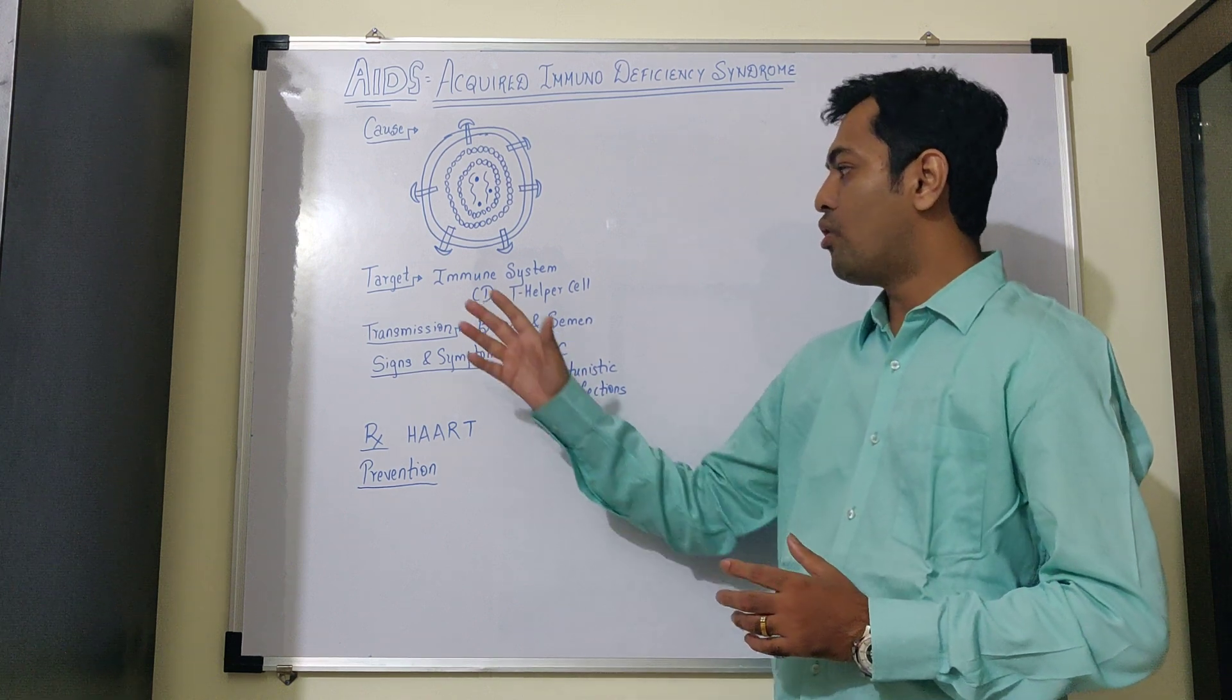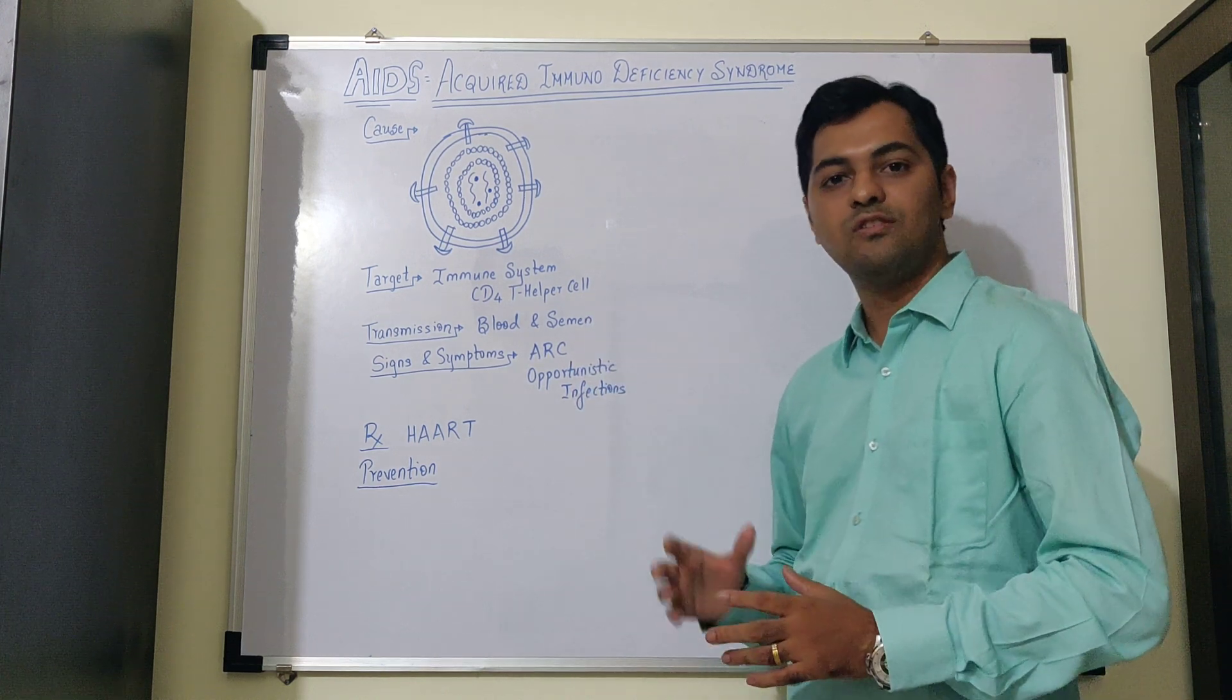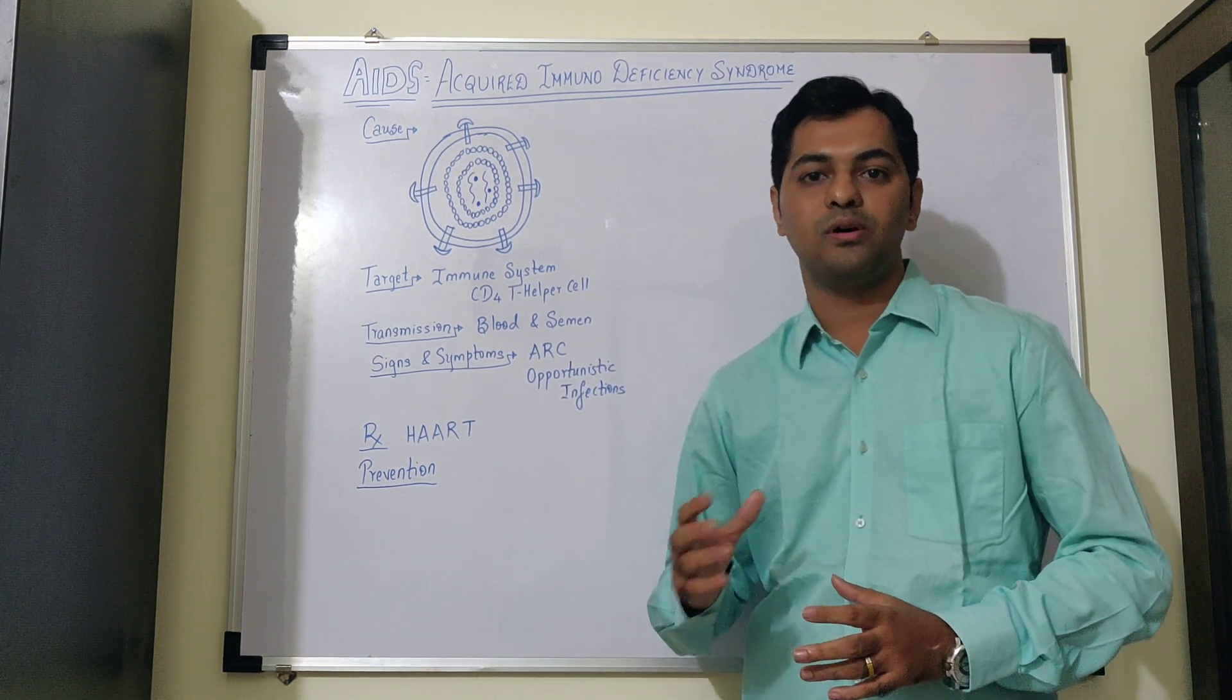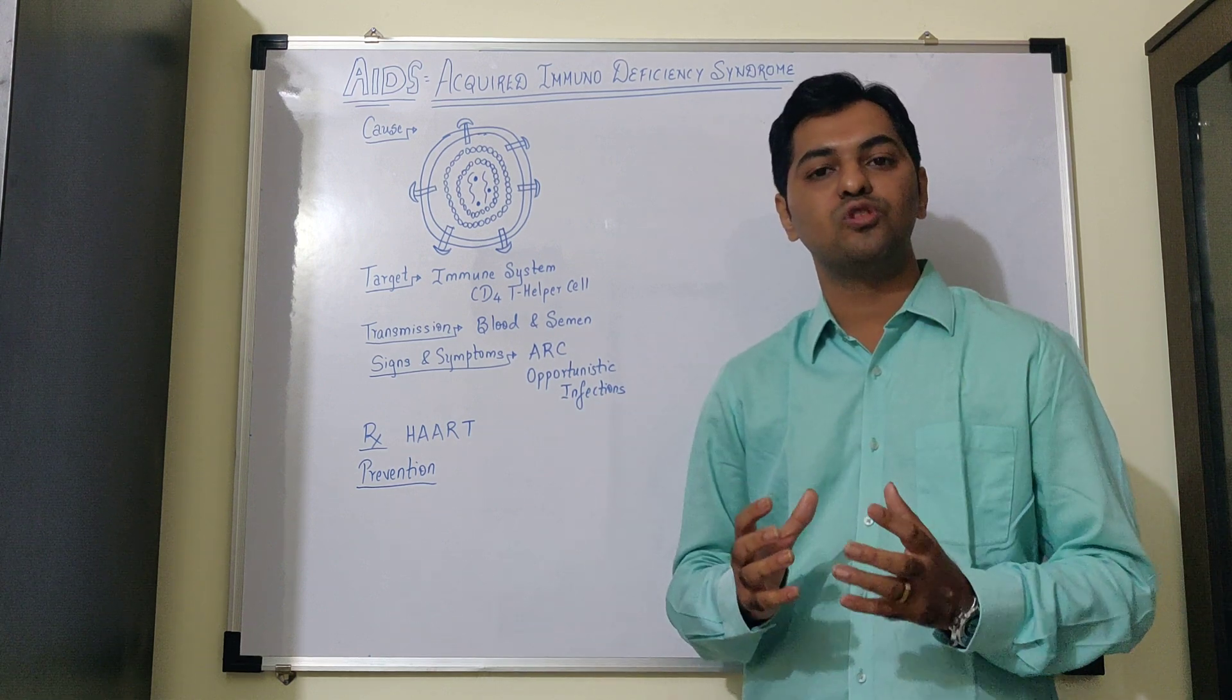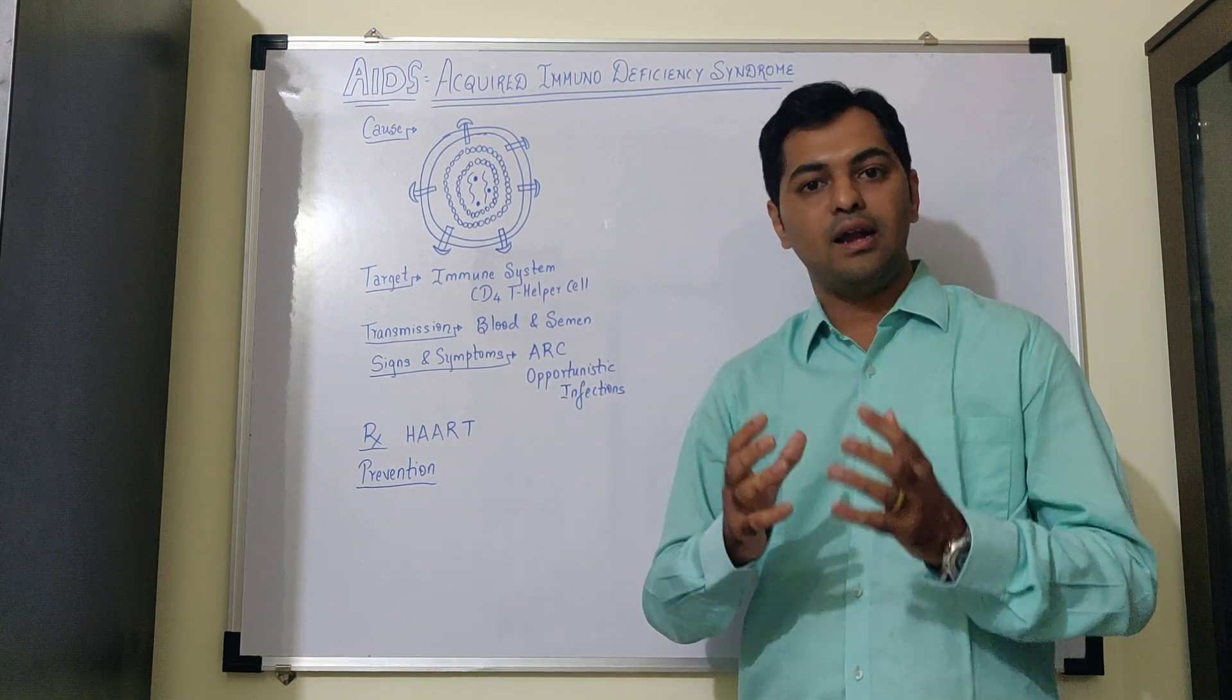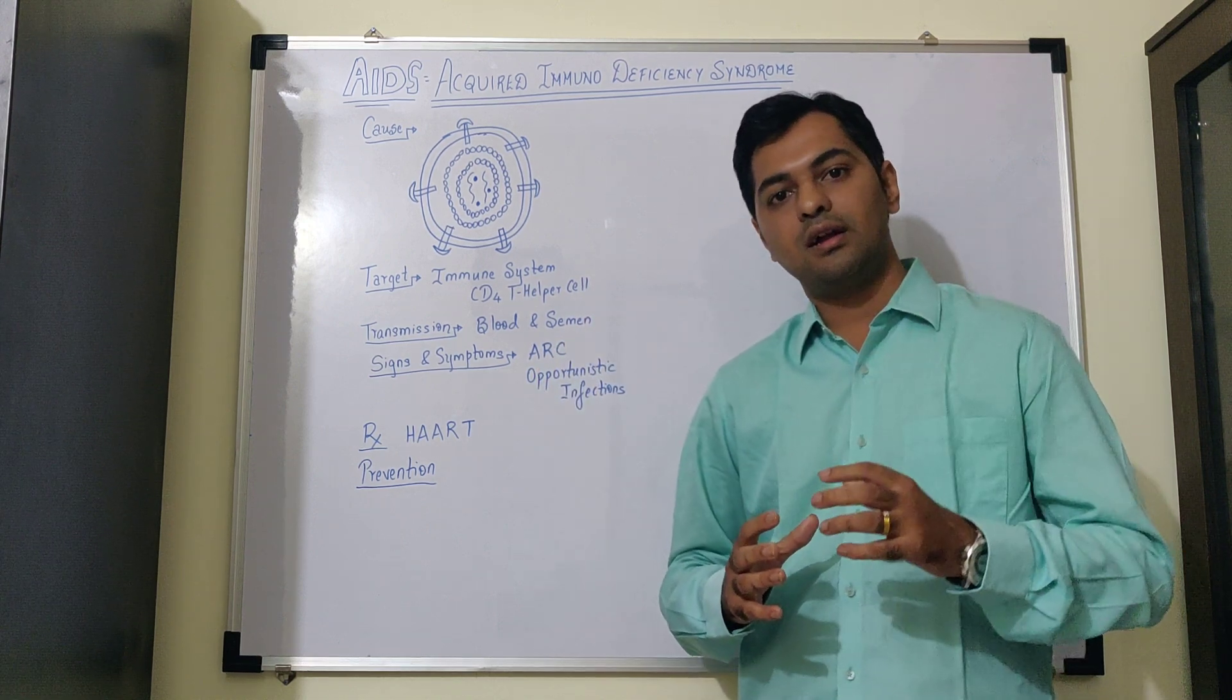Now, the mode of target of this HIV is specifically the immune system cells known as CD4 T helper cells. These are the T lymphocytes, which help the entire immune system to build up. And the virus specifically targets these helper T cells.